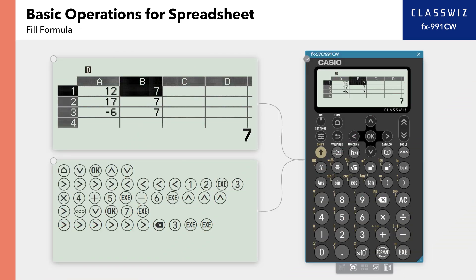Move from cell B1 to cell C1. In this example, we are putting the same formula of 2 times value in cell A plus value in cell B in cells C1, C2, and C3. We'll use Fill Formula to batch input these formulas.